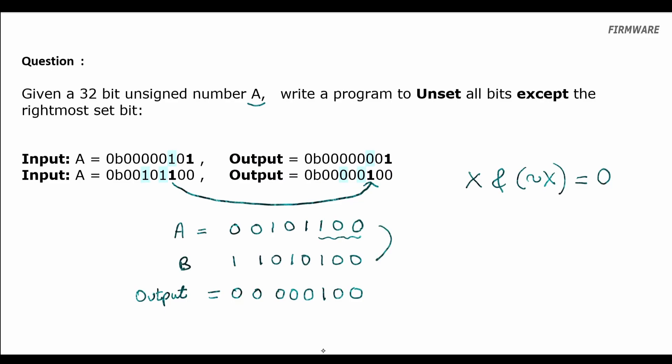As we had learned, minus A is: starting from the LSB in A, we keep the bits the same until we reach the first one. After which, we toggle all the remaining bits. So this is minus A.